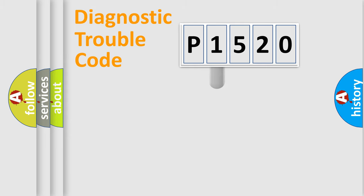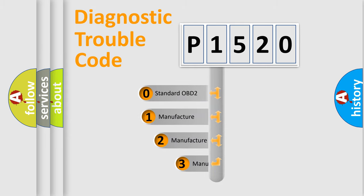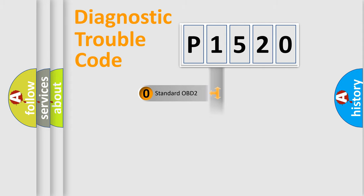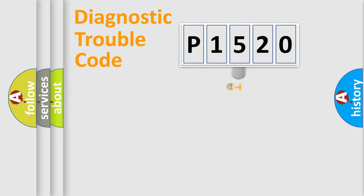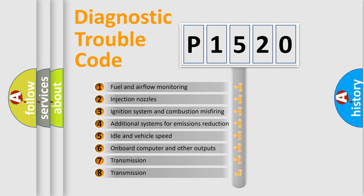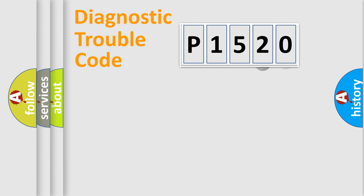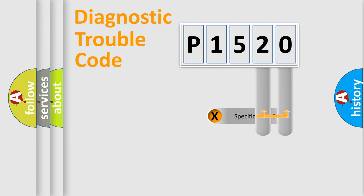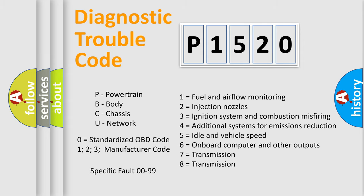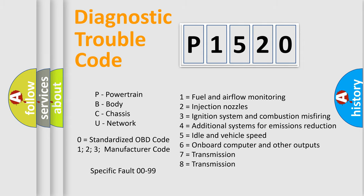This distribution is defined in the first character of the code. If the second character is expressed as zero, it is a standardized error. In the case of numbers 1, 2, or 3, it is a manufacturer-specific error. The third character specifies a subset of errors. This division is valid only for the standardized DTC code, and only the last two characters define the specific fault of the group. This applies only when the second character is zero.